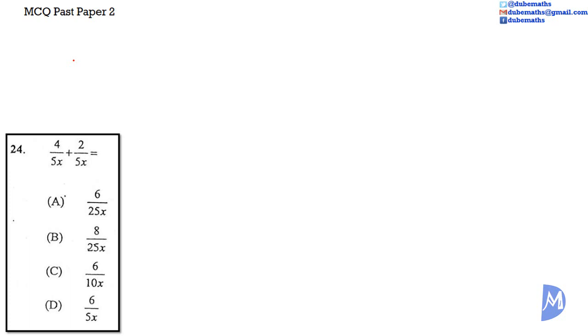Once the fractions are over the same denominator, we simply add the numerators. So 4 over 5x added to 2 over 5x is equal to 4 added to 2. 4 plus 2 is equal to 6, 6 over 5x.